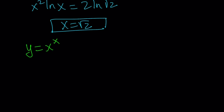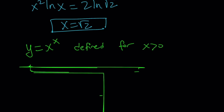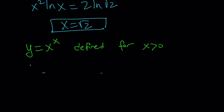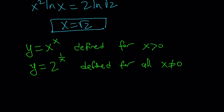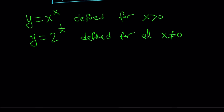So y equals x to the power of x is defined for positive x's — we already talked about it. What about the other one? For the second function, we have y equals 2 to the power of 1 over x, and that is defined for all x values except x does not equal 0. Let's go ahead and take a look at the second function. We talked about the first one quite a few times, so you should be more familiar. Let's look at 2 to the power of 1 over x closely.